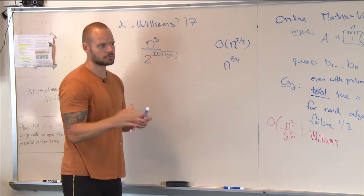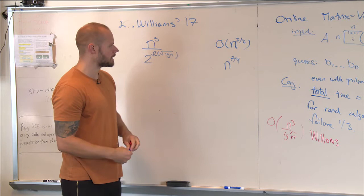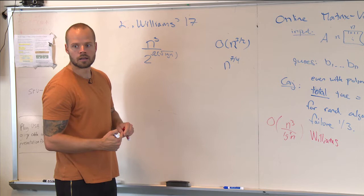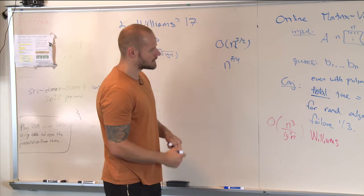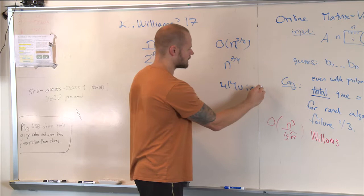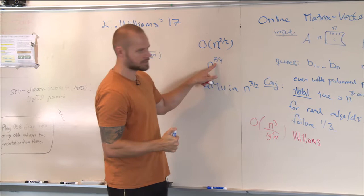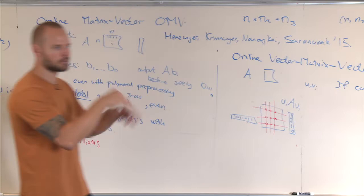The cell probe model can handle every single query in n^(7/4). The 7/4 comes because we solve vector matrix vector in n^(3/2) — here we save a half over the quadratic. So we're just going to save a quarter by doing the reduction from matrix vector to vector matrix vector. We're also going to solve vector matrix vector in n² over 2 to the √(log n), not in the cell probe model but in the standard word RAM model. The factor of 2 just goes into ω, so we don't care about running the reduction.